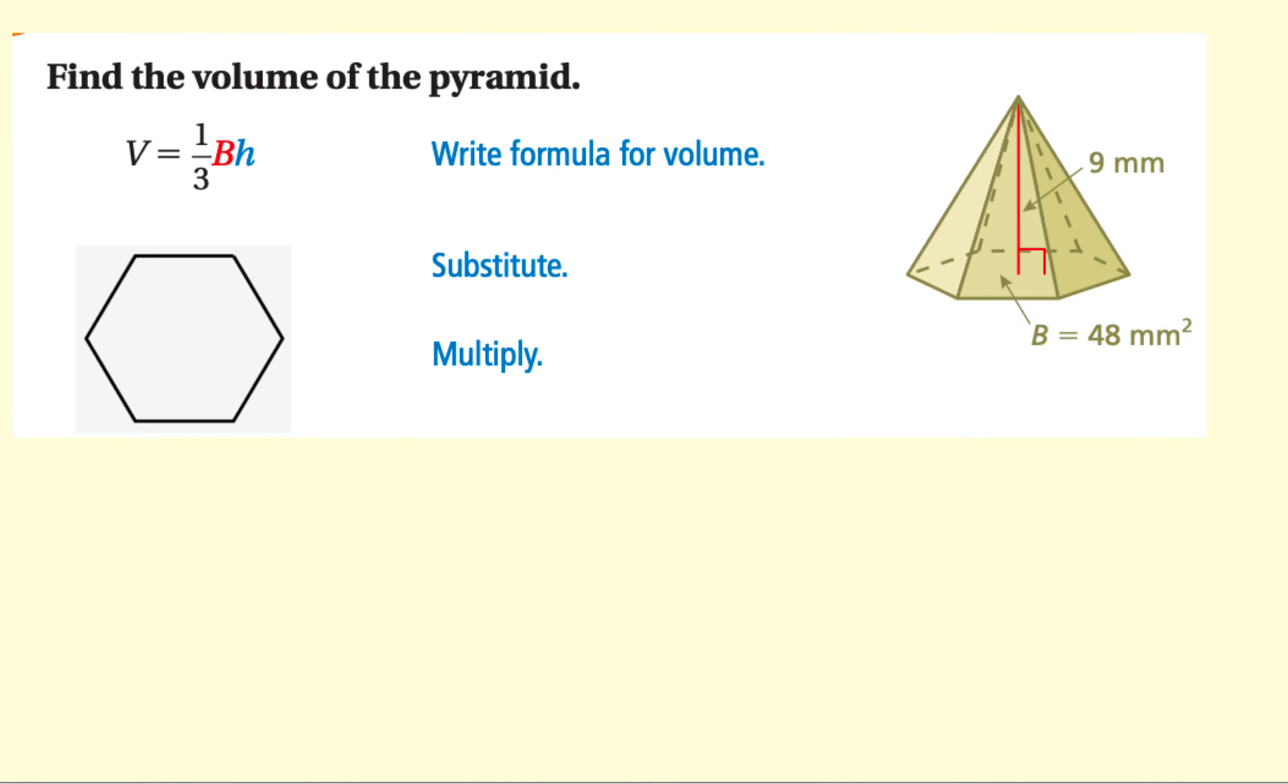Let's go ahead and use this formula for this hexagonal pyramid. Notice I've already drawn the hexagon over here on the side, and it's been given to us that the base, this whole base, is 48. And here it is right here telling me this whole base is 48. So we don't have to figure out the area here. It's already been given to us.